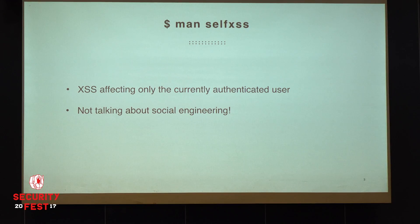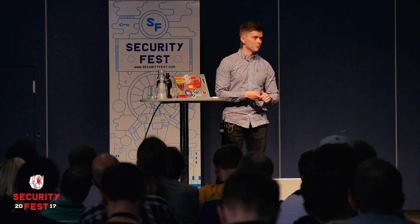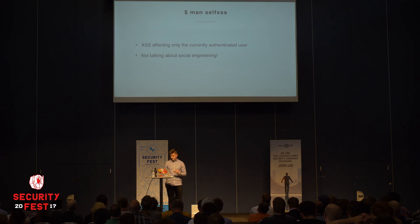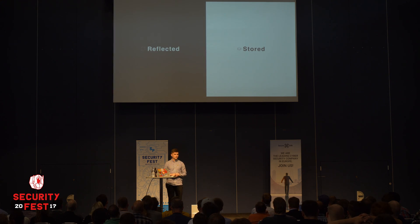It can mean many things, and it's been used to describe many different kinds of bugs throughout the years. What I mean when I say self-XSS is cross-site scripting vulnerabilities affecting only the currently authenticated user — in other words, an XSS that is only on your account. What I don't mean is the social engineering attack where you trick someone to open the JavaScript console and paste a JavaScript payload there. Self-XSS, like other types of XSS, has multiple categories, and today I'm going to talk about reflected self-XSS and stored self-XSS — what they are, why it's a controversial topic in the bug bounty world, and how you can exploit it.